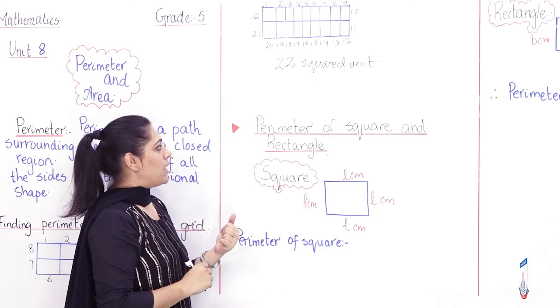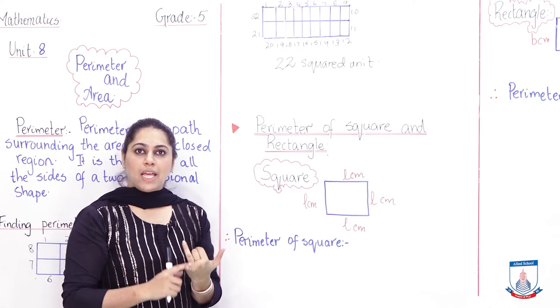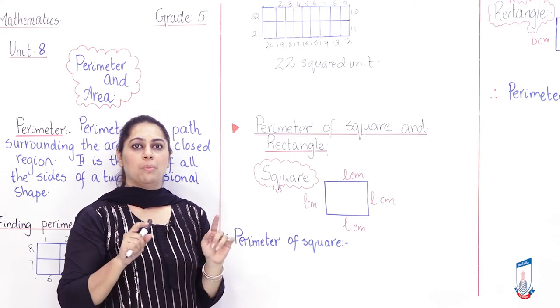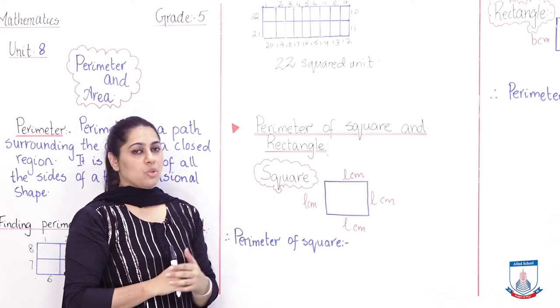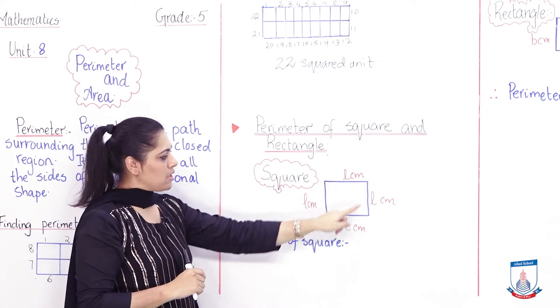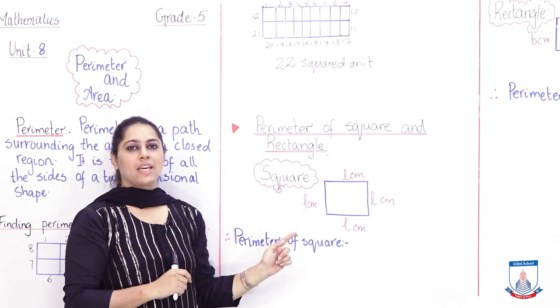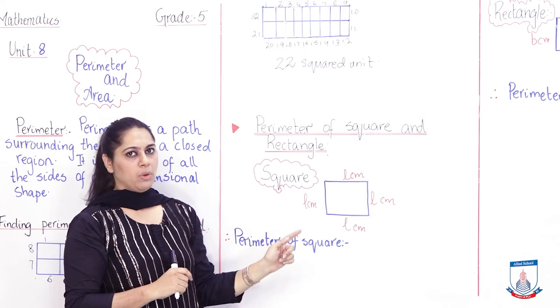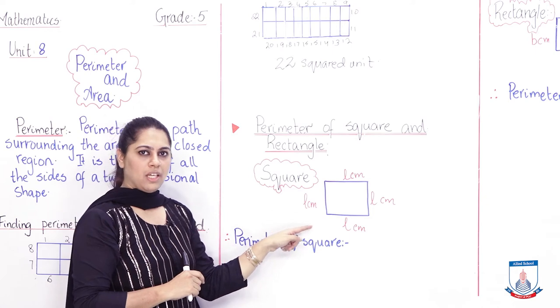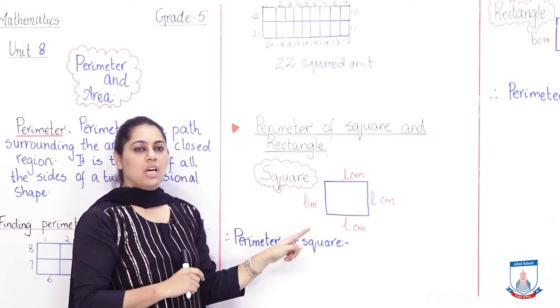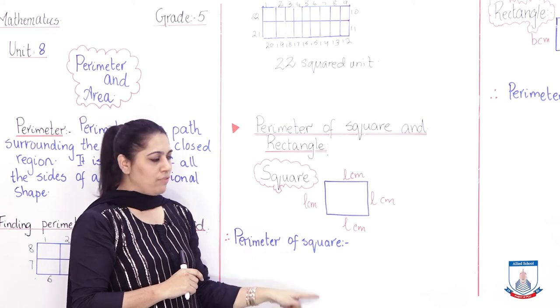Very good. Now we study square or rectangle when we are given length or asked to measure the length to find out the perimeter of square. Now I will tell you, this is the figure of square. What is square's property? All its sides are equal. I don't have its measurement, but now we will derive its perimeter formula through this.